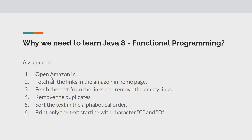I have given you an assignment. You have to open amazon.in and fetch all the links on the homepage. You need to fetch the link text for each link, and then remove any links that don't have any text — maybe they have blank text — we don't need those. Also, if there are duplicate links with the same link text, remove the duplicates.